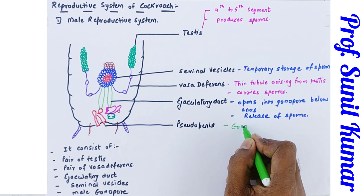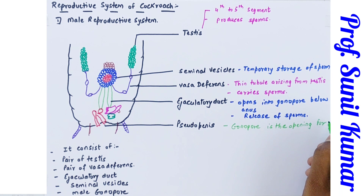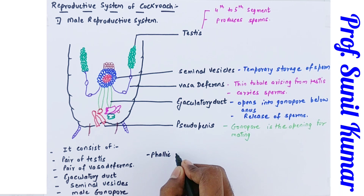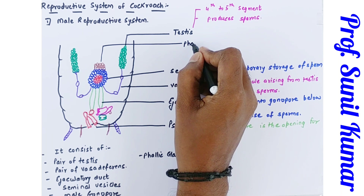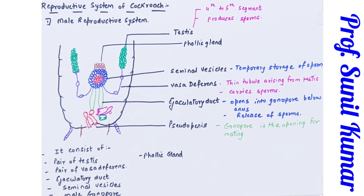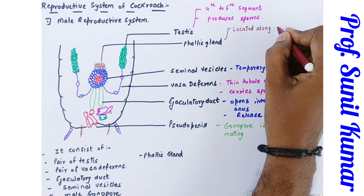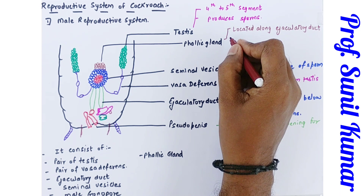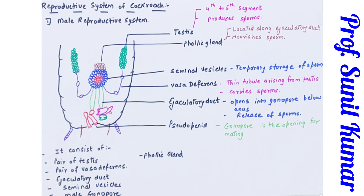The next part is the phallic gland — the brown colored gland I have made. The phallic gland is the most important gland; it provides nourishment to the sperm. It is located along the ejaculatory duct so that when sperm are released through the ejaculatory duct, they are nourished by the secretion of the phallic gland. The phallic gland is also known as the conglobate gland — that is its other name.